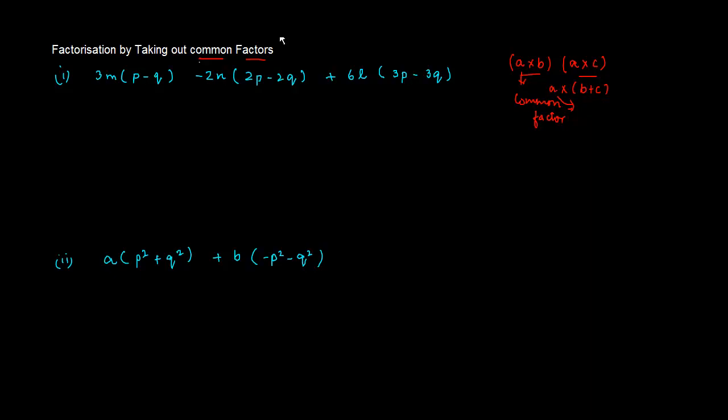In many situations, when you come across mathematical problems, the way you can solve it is if you can find out a common factor which is multiplying various other things and forming an algebraic expression. Now, in this case, let us see, we have 3M into P minus Q, then minus 2N into 2P minus 2Q, plus 6L into 3P minus 3Q.